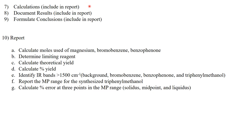And then as normal we would do calculations, document our results, and formulate conclusions. I have done a lot of that already in the video of the experiment and in my lab notebook. For the report this week what I'd like everyone to do is calculate the moles used of magnesium, bromobenzene, and benzophenone. Use that information to determine the limiting reagent of this reaction and then calculate the theoretical yield, calculate the percent yield. This will go very quickly.